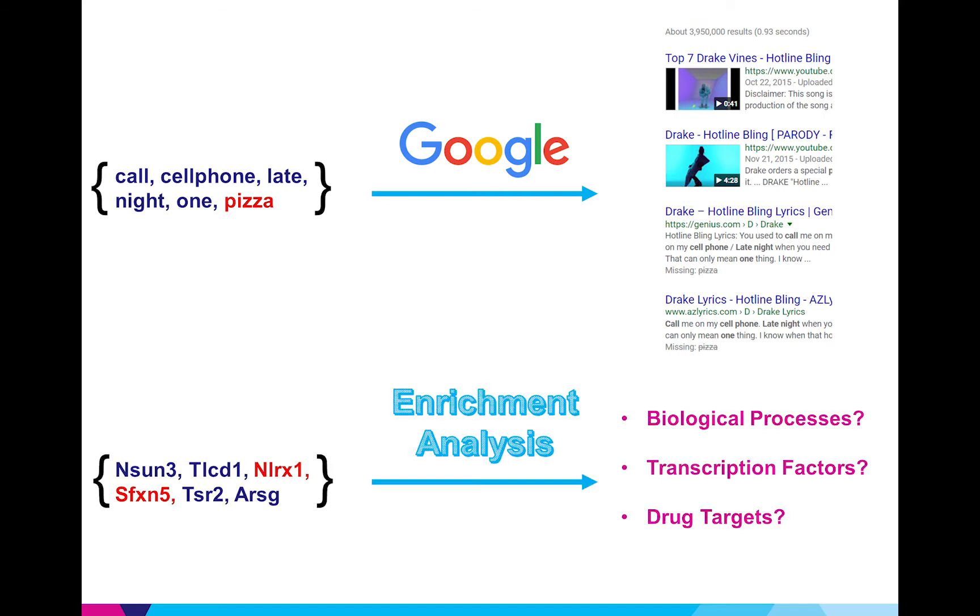In the same way enrichment takes in a set of genes and outputs a ranking of annotated gene sets and these annotations can correspond to a variety of things. This is helpful to scientists because they can input a set of genes related to an experiment they're working on and then learn more about the biology that connects the set of genes. Like doing a Google search, enrichment should be tolerant of some level of noise.